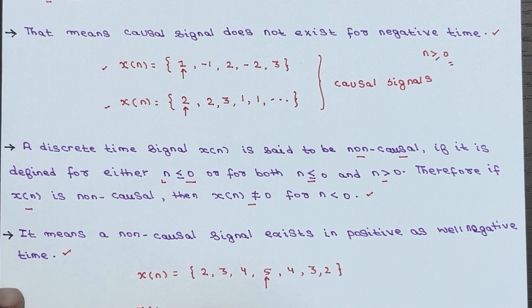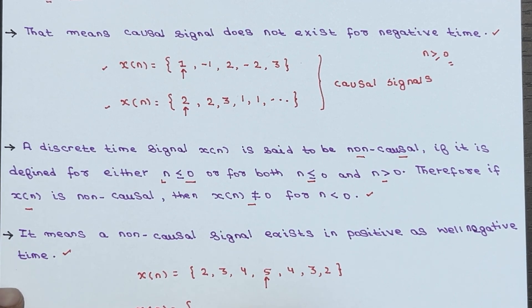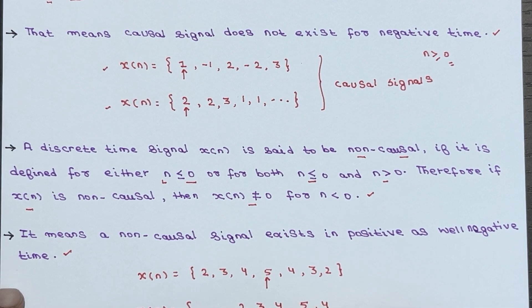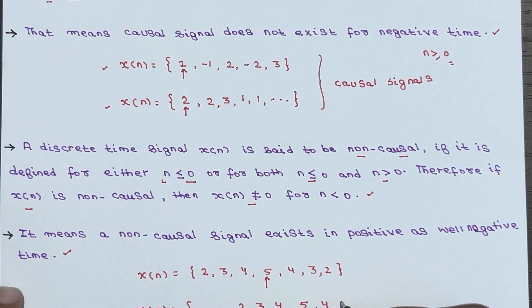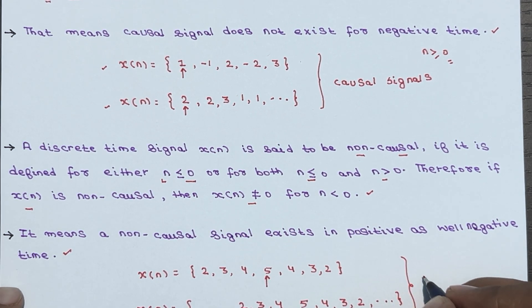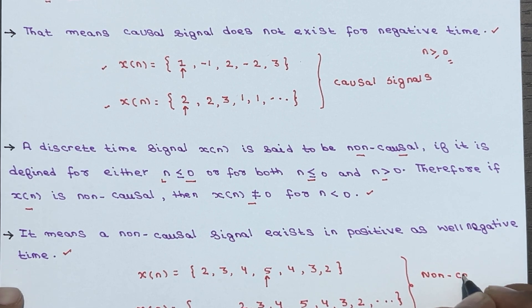We have another example where the duration is infinite: 2, 3, 4, 5 at n equal to 0, then 4, 3, 2, and so on. These two signals are called non-causal signal examples.